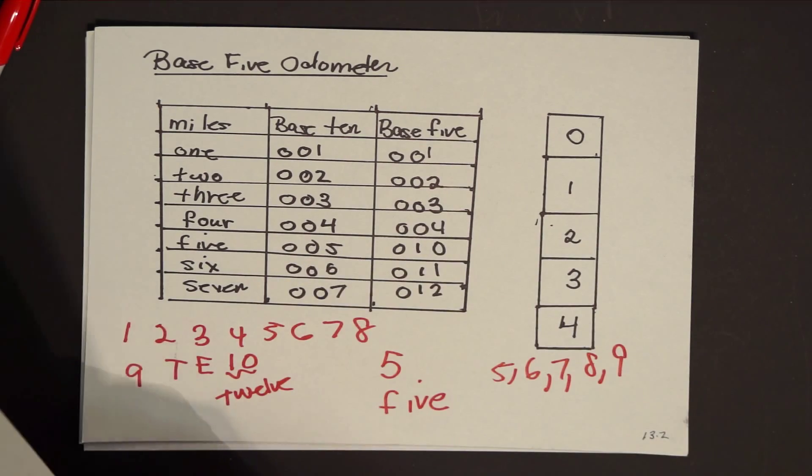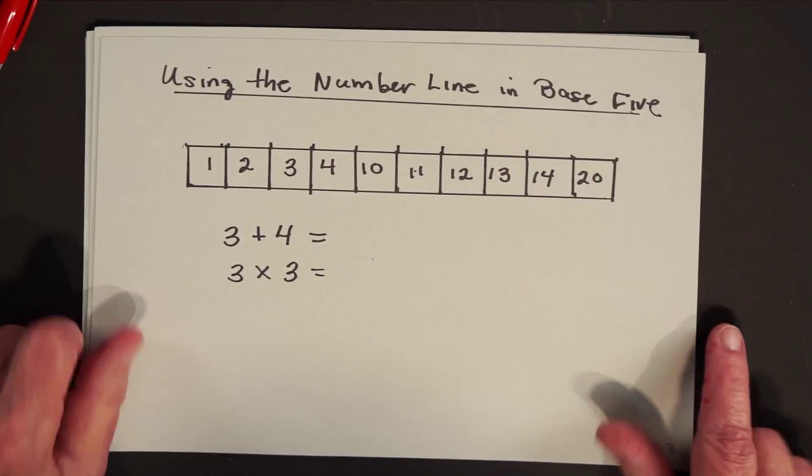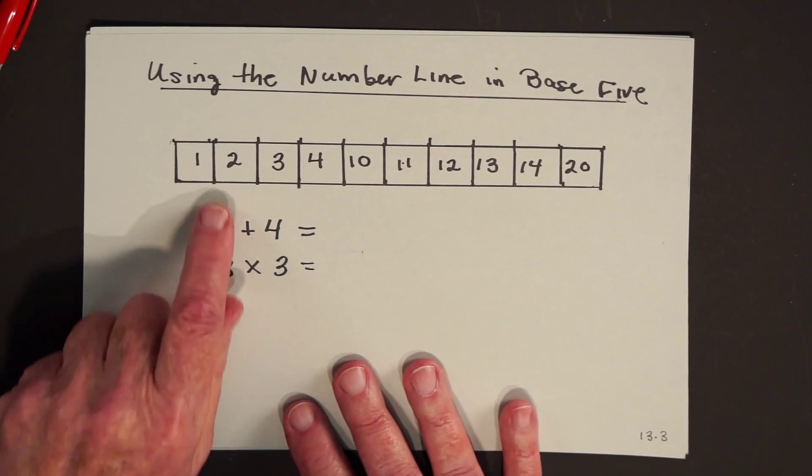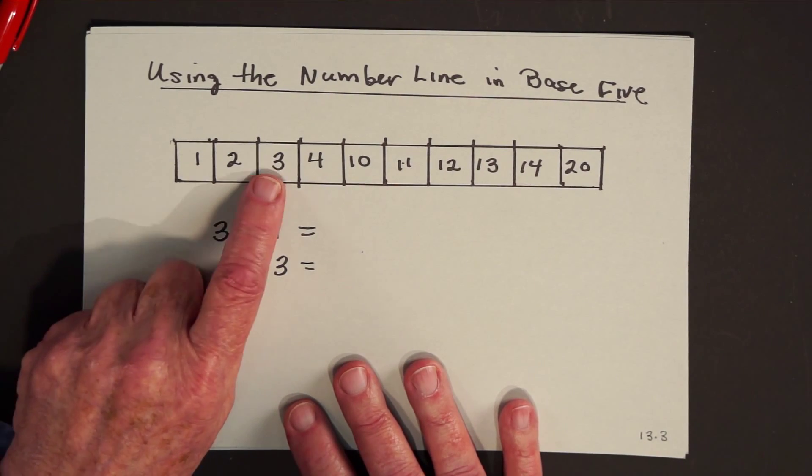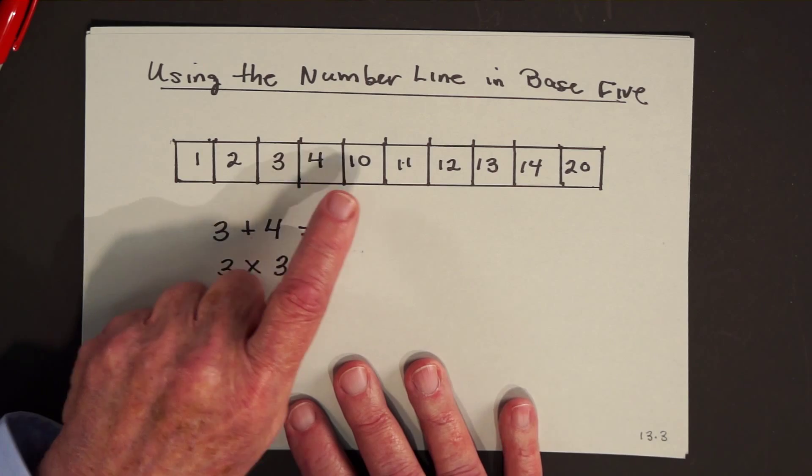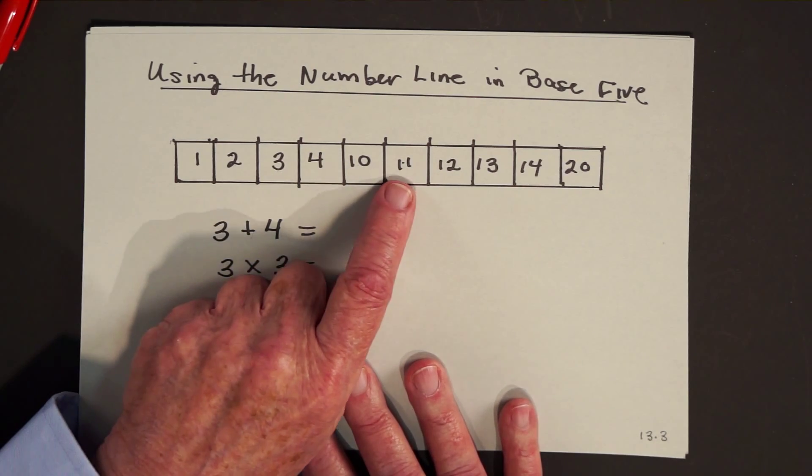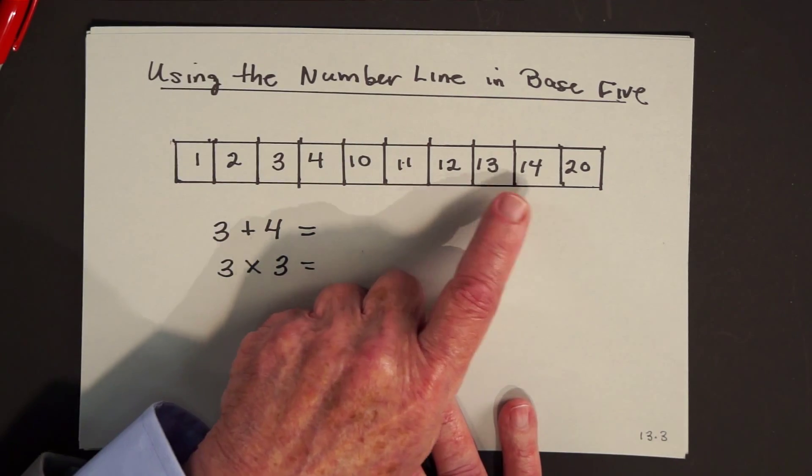So in other words, what would the number line look like in base five? See if you can follow this. You'd count one, two, three, four. Now you're trading in one zero, one one, one two, one three, one four.